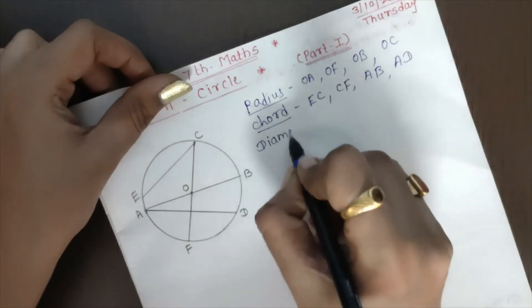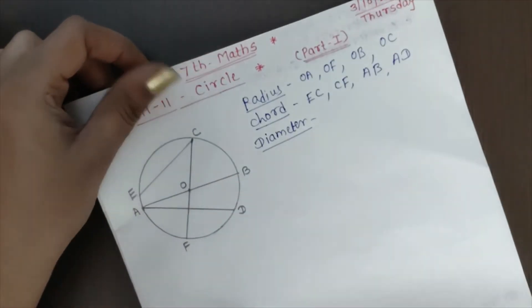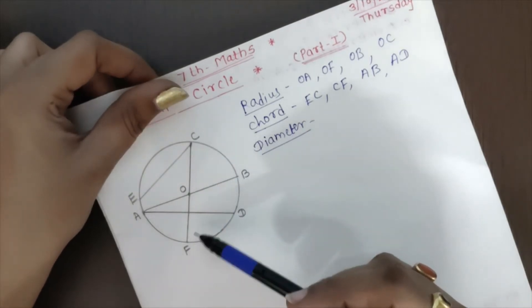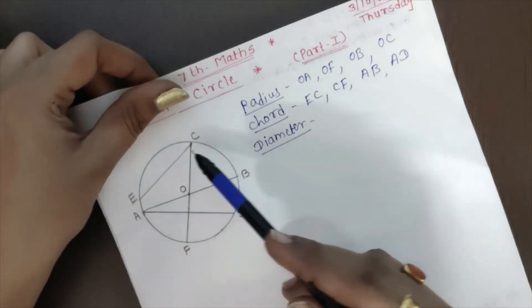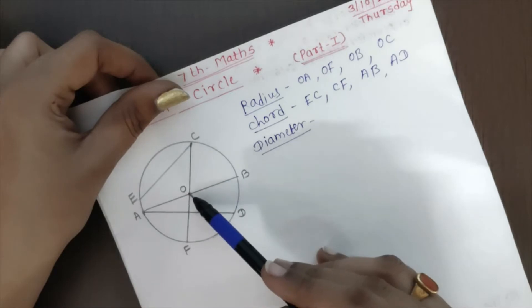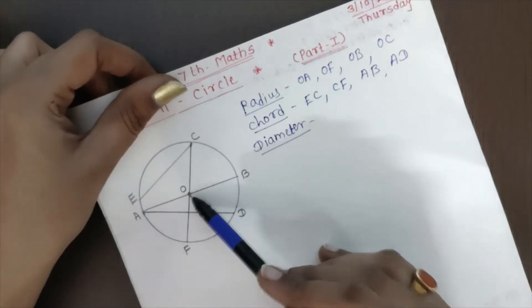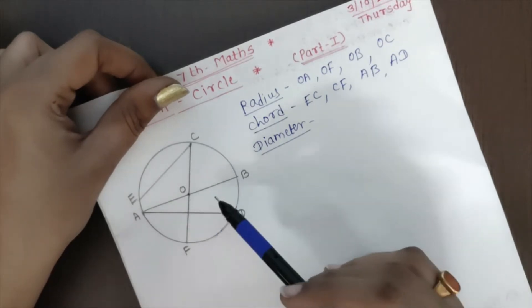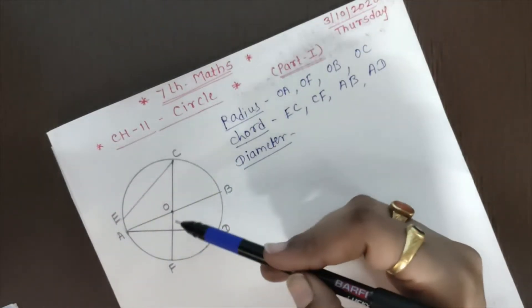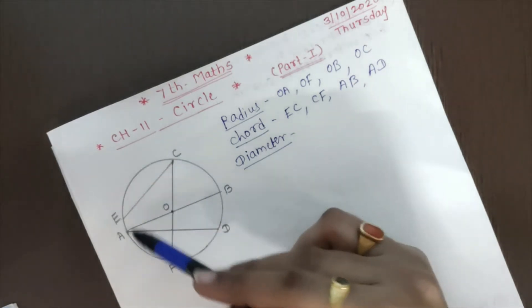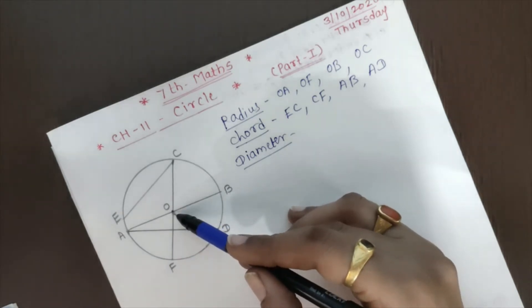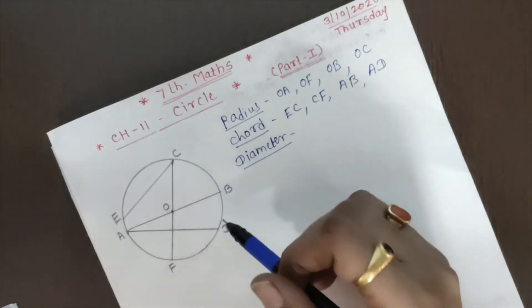Then what about the diameter? So diameter means such a segment that joins any two point from the circumference, but that segment passes through the center of the circle, is called the diameter of that circle.